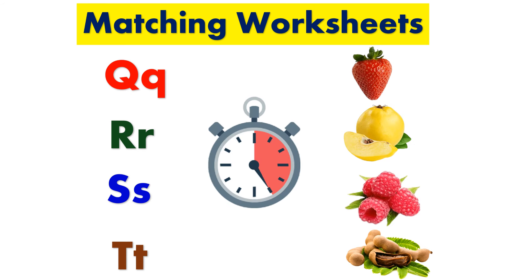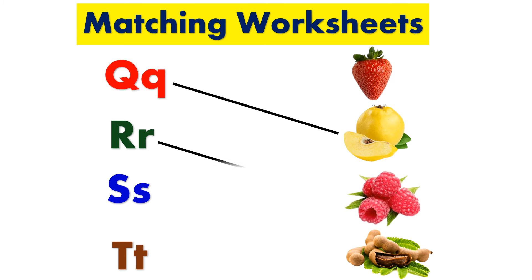Q for quince, R for raspberry, S for strawberry, T for turmeric.